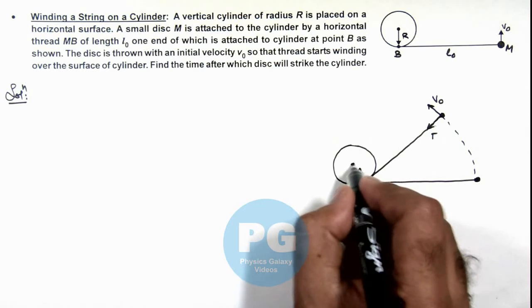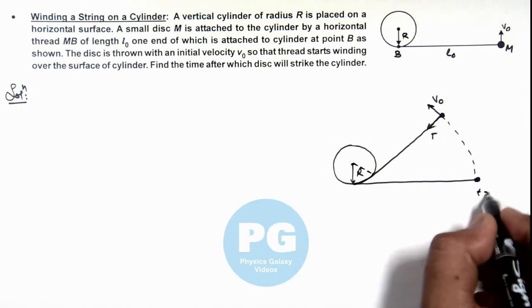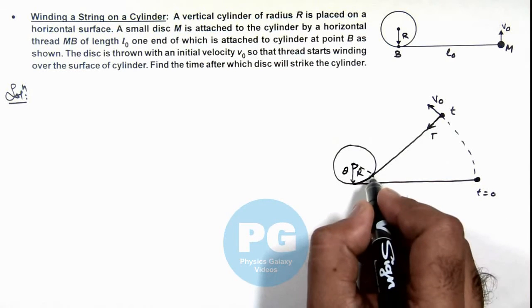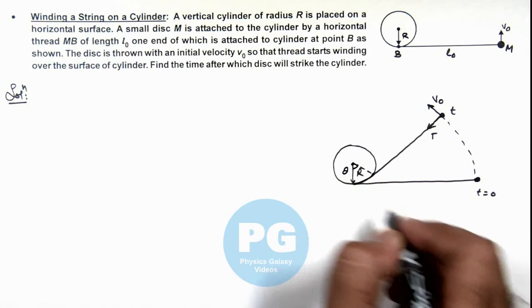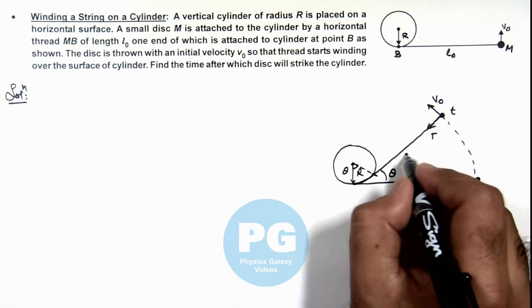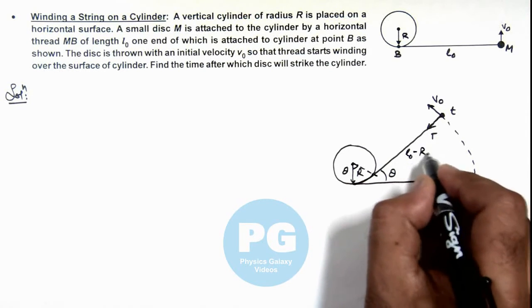And say if from t=0 to t, it has rotated by an angle θ, then this string will also have turned by an angle θ and the length of string over here will be L₀ - Rθ.